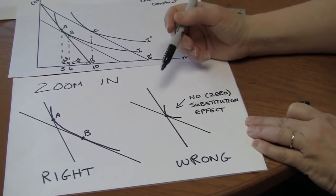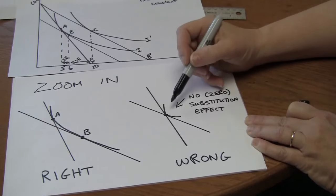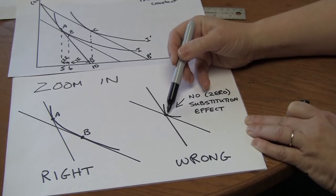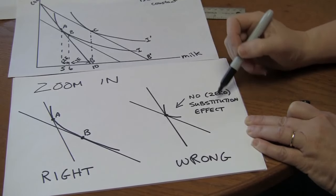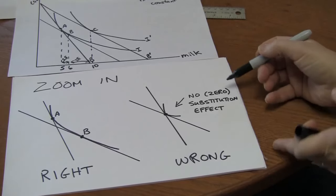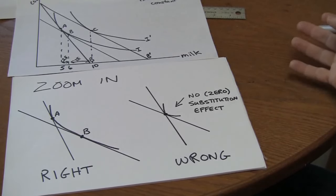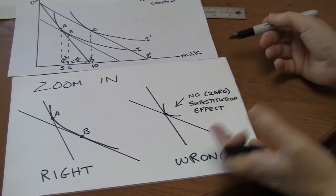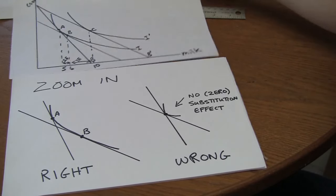The most common mistake that people make when drawing income and substitution effects is to have the indifference curve tangent at the point where the budget lines cross. That's a problem because here you have no substitution effect at all. Sometimes you might want to have a zero substitution effect, but if you're trying to show a positive substitution effect, you're not going to get very far with that.